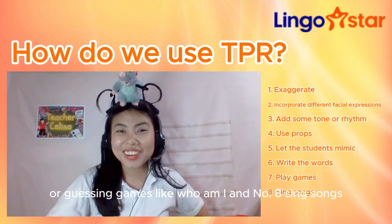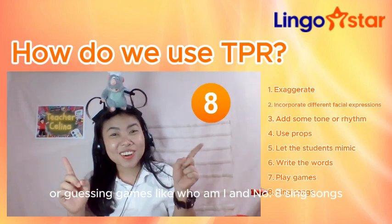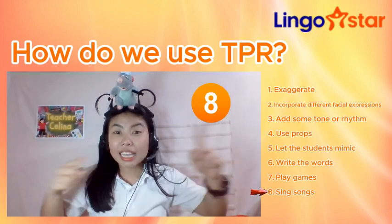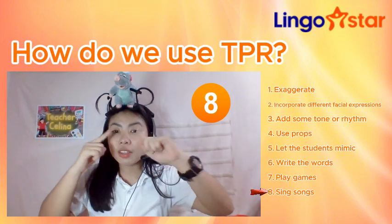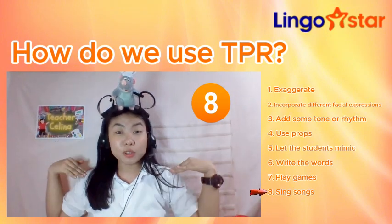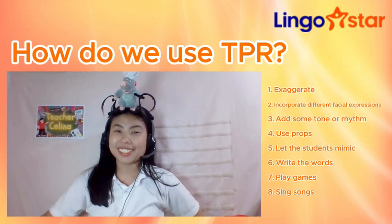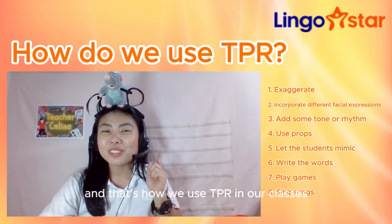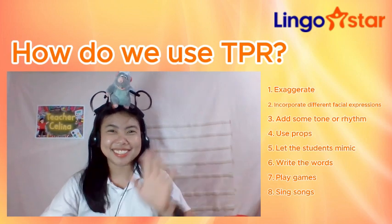Number eight, sing songs. Eyes and ears and mouth and nose — Head, shoulders, knees and toes, knees and toes. And that's how we use TPR in our classes.